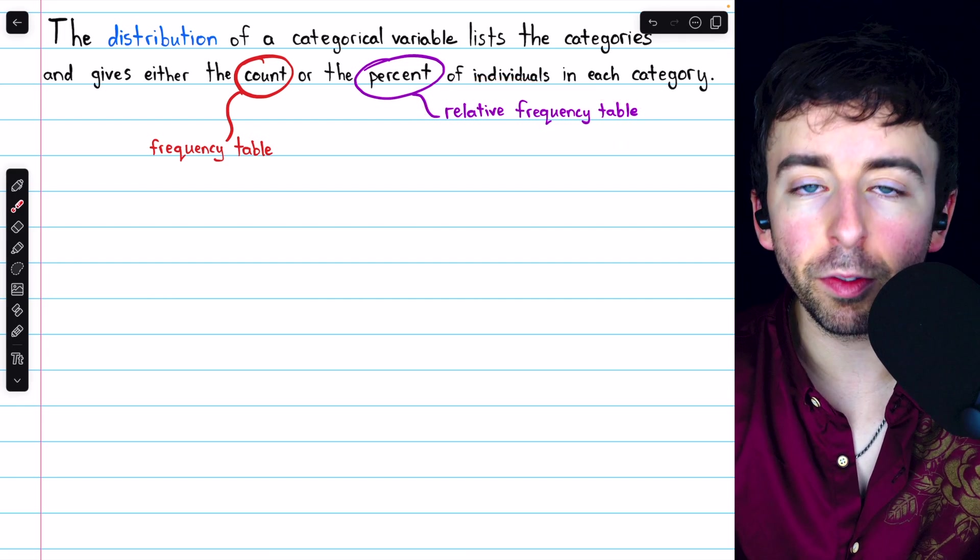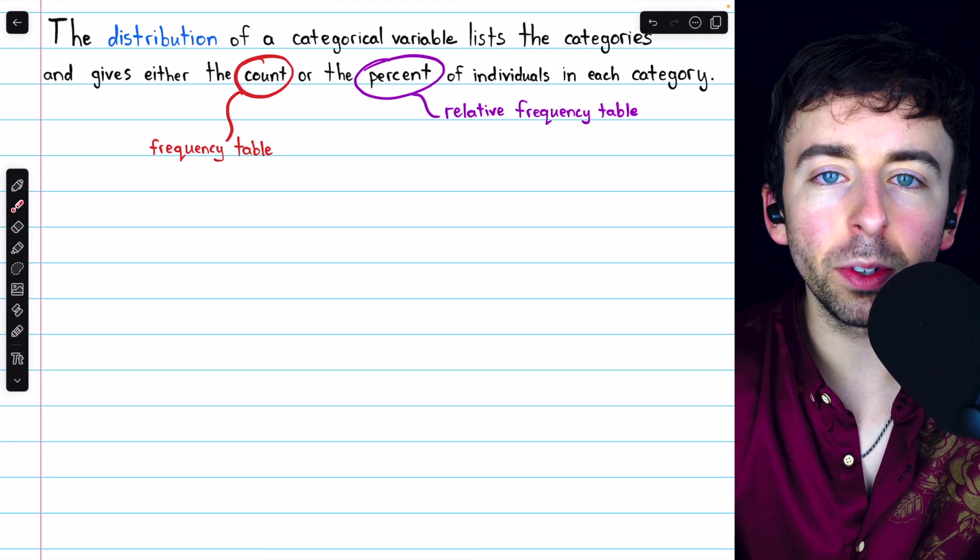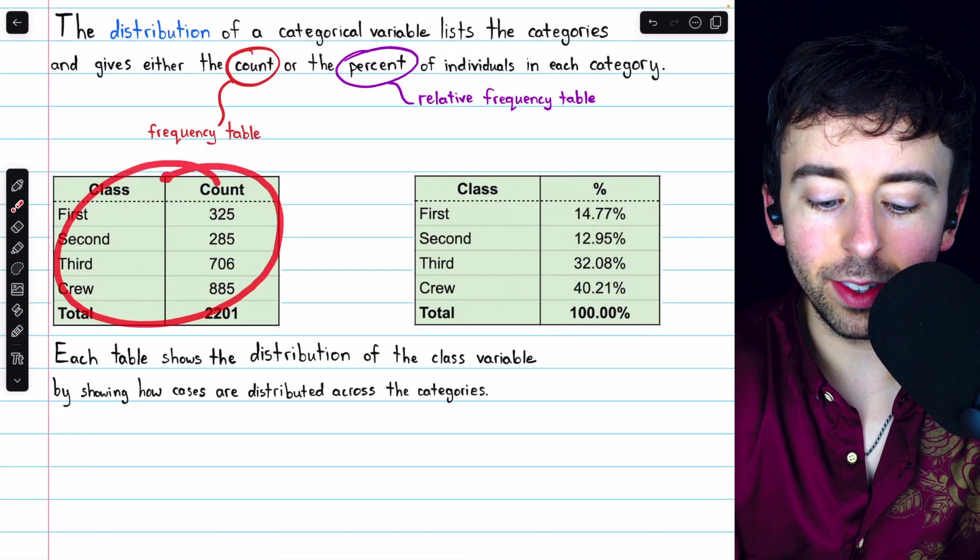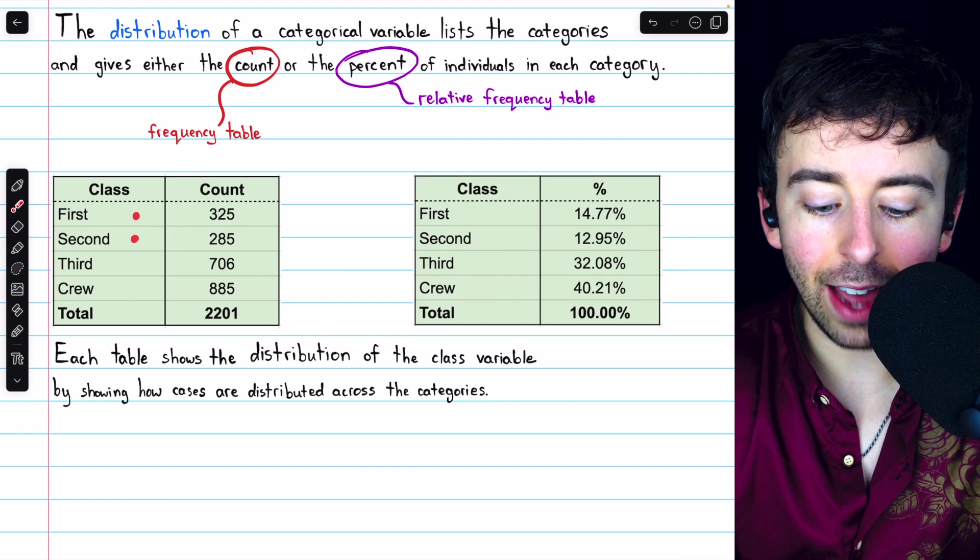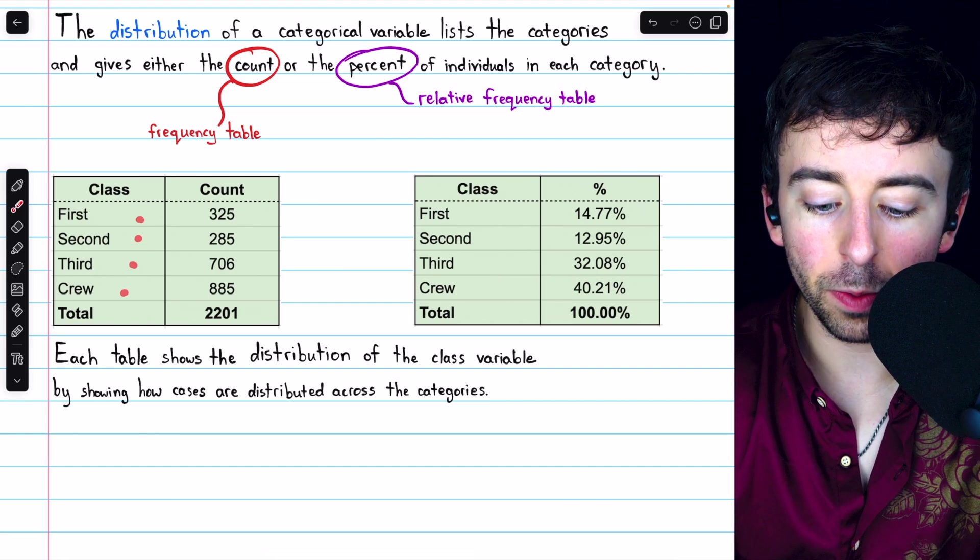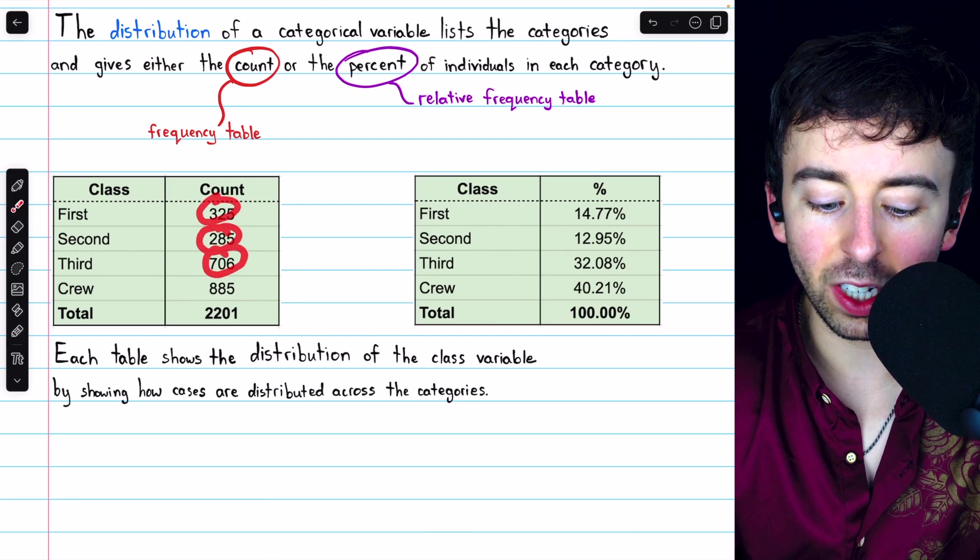Sometimes we may also want to make a relative frequency table. Rather than just showing the numbers of people in each class, a relative frequency table would show the percent of the total in each class. Here is a frequency table for the class variable. You can see each category the variable takes on is listed: first, second, third, and crew. And then we have the counts, the frequency in each category.